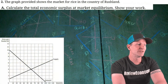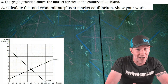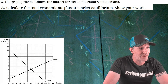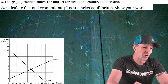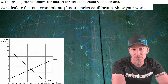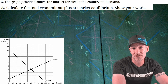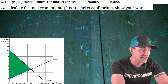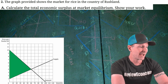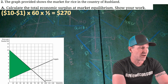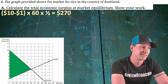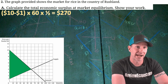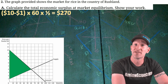On to question two: we have a provided graph for the market for rice in Rushland. We have to calculate the economic surplus at market equilibrium and show our work. Economic surplus is consumer surplus plus producer surplus — that giant triangle. It has a height of 9 (from $10 to $1) and a base of 60 units. So: (10 − 1) × 60 × ½ = $270 worth of economic surplus.